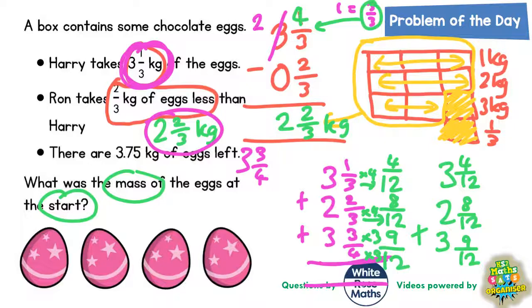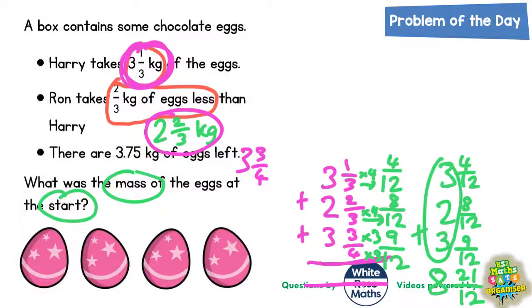Now we add this up: 3 plus 2 plus 3 is 8 whole ones. And 4 twelfths plus 8 twelfths plus 9 twelfths — that's like saying 4 apples plus 8 apples plus 9 apples: 4 plus 8 is 12, and 12 plus 9 is 21. So that is 21 twelfths. But there's a problem: this answer of 8 and 21 twelfths we can't just leave like that.